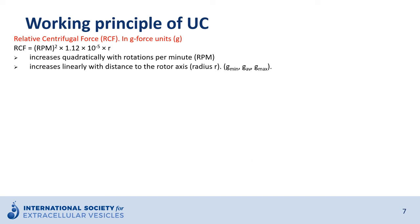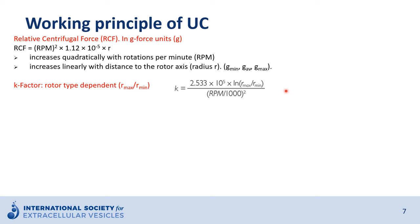When extracellular vesicles and other particles are being centrifuged, they experience a relative centrifugal force or G-force. This force increases quadratically with rotations per minute and linearly with the distance of the particle to the rotor axis. So during centrifugation, the G-force for each individual particle increases as it migrates from the top to the bottom of the tube. Since this migration path length depends on the rotor type, the rotor type is often defined by a so-called K-factor.